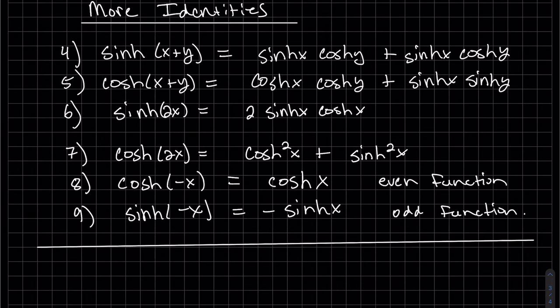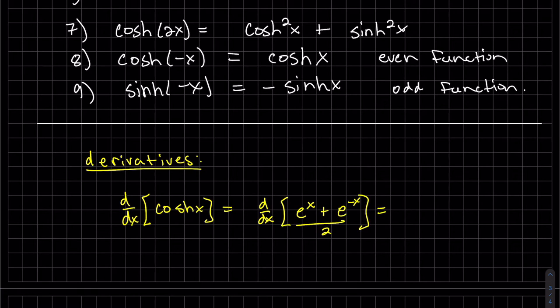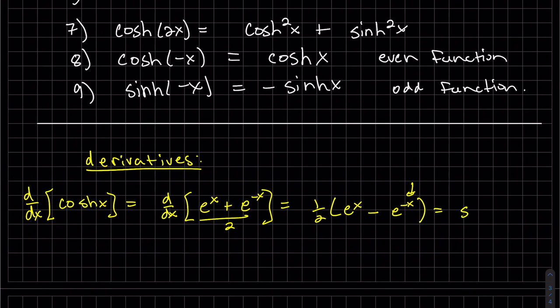Now let's work out some of the derivatives. The first one. So that half is a constant, so it can come out. And then we can take the derivative of each term. But you have to do the chain rule. The derivative of minus x is minus one. And that looks, yep.